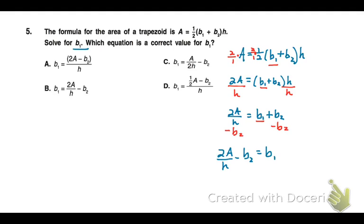So my formula rewritten for base 1 will equal two times the area divided by the height minus base 2. Now I'm going to match that with my answer choices, and choice B is the one that I want.